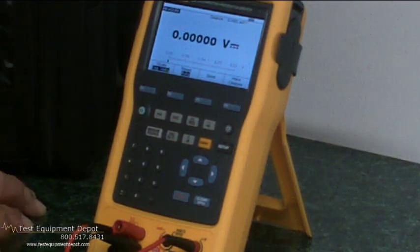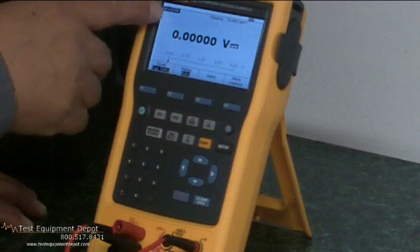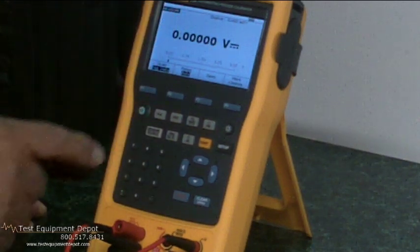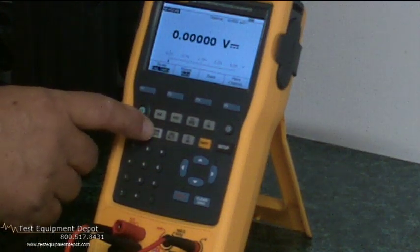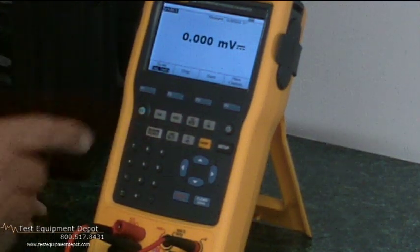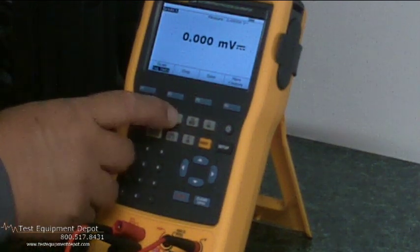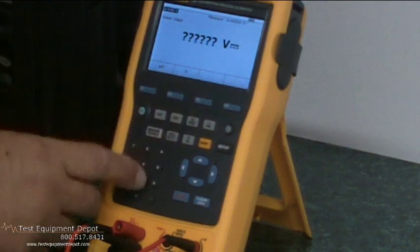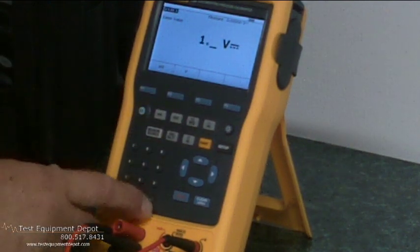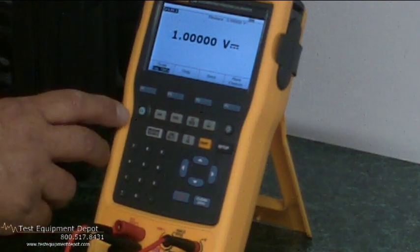So let's begin by selecting the function. In this case, we're going to measure one volt DC, so we'll select DC volts. Next, we're going to source. So we're going to select our source, select DC volts, one point zero, enter. Now we're outputting one volt DC.